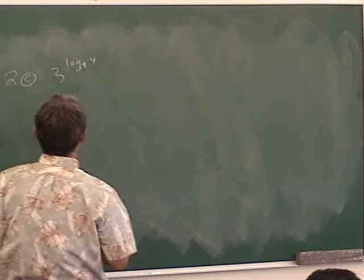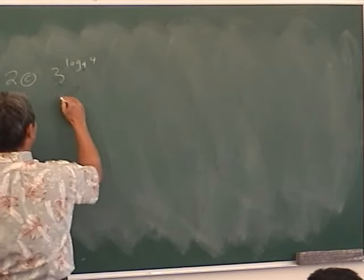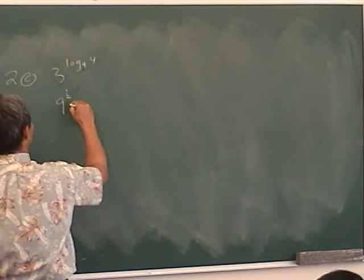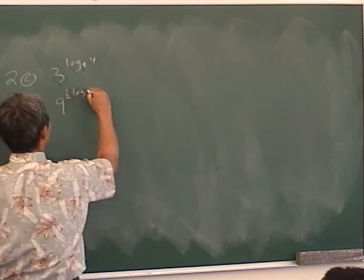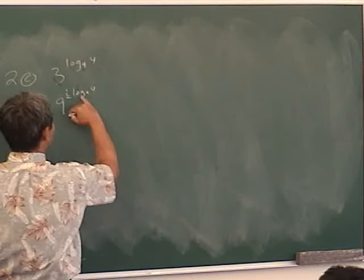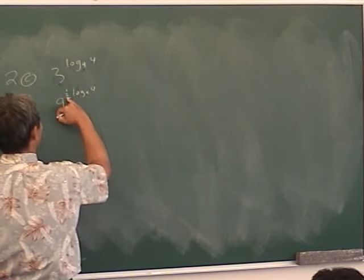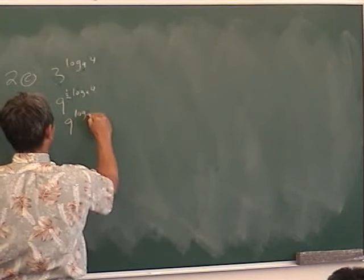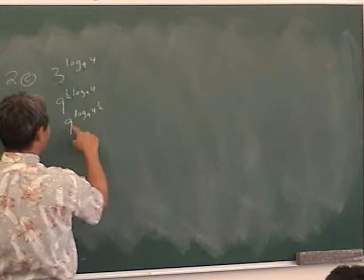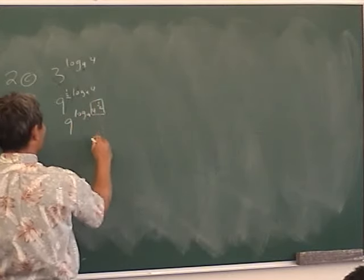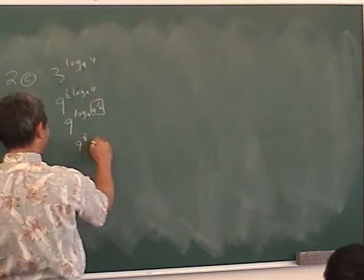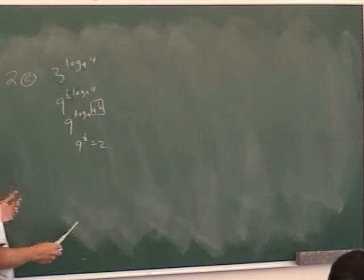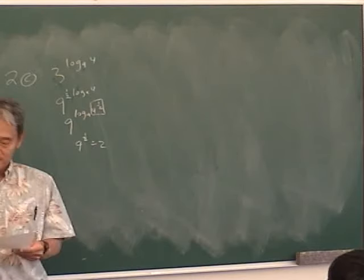I think the easiest is to change this to a 9. How do you change it to a 9? Well, isn't 3 the same thing as 9 to the 1 half power? Yes. And then you multiply the exponents. And then when you have a logarithm, what can you do with this number in the front? So now you have 9 to the log base 9 of 2, so the answer is just 2. So if they're not the same, you're going to make them the same. So that's number 2.